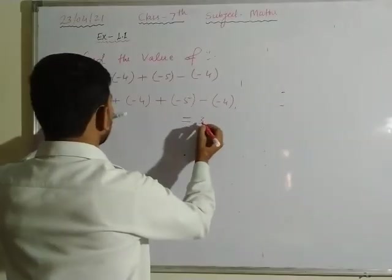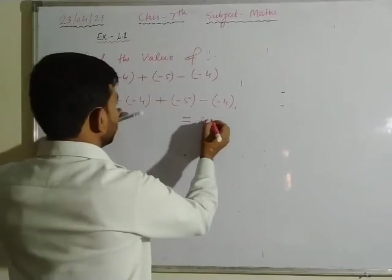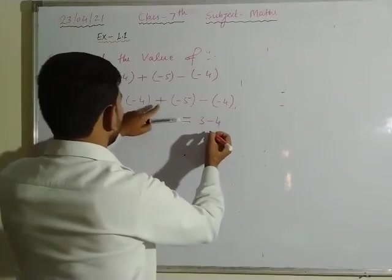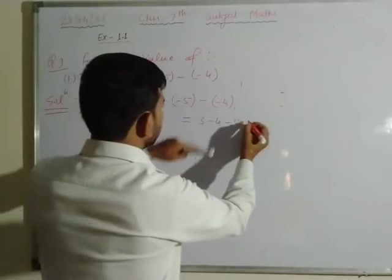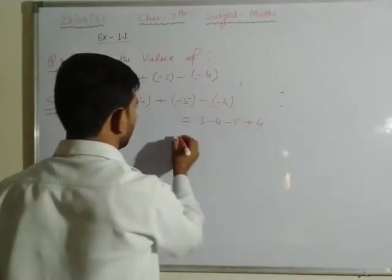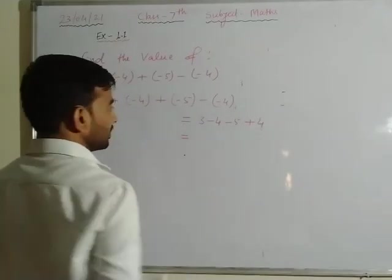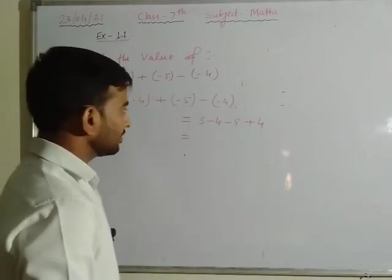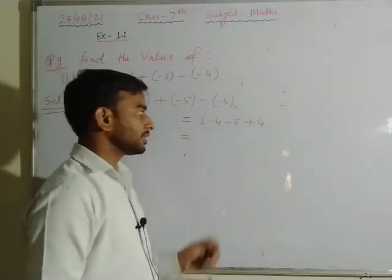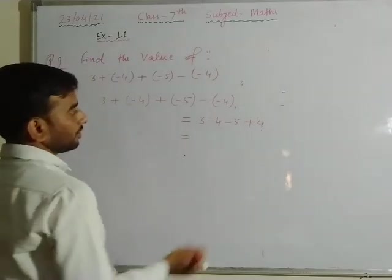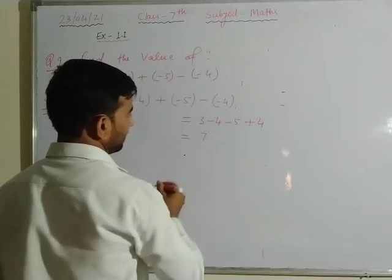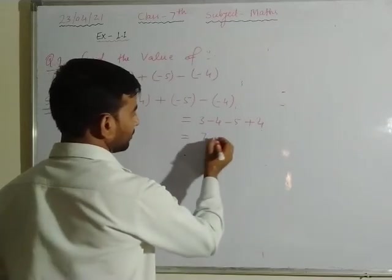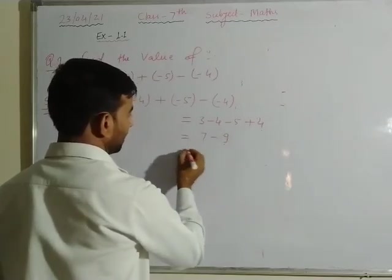So: 3 plus minus 4 plus minus 5 minus minus 4. Applying sign rules: equals 3 minus 4 minus 5 plus 4. Now group same-sign integers together. Same sign positive: plus 4 plus 3 equals plus 7. Same sign negative: minus 5 minus 4 equals minus 9.